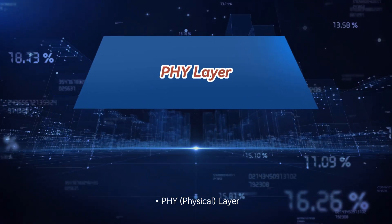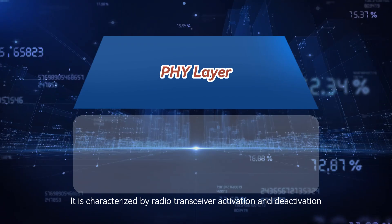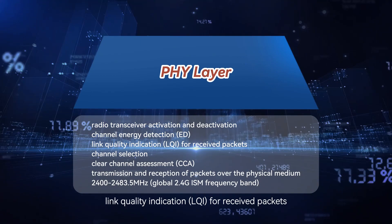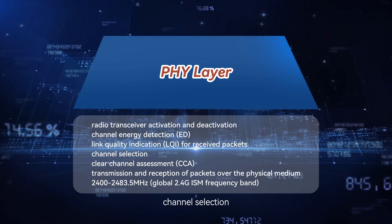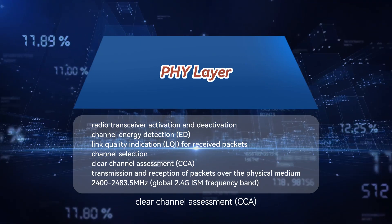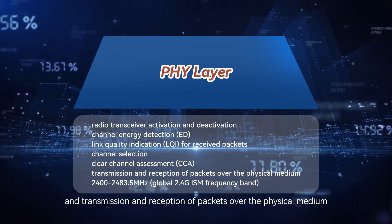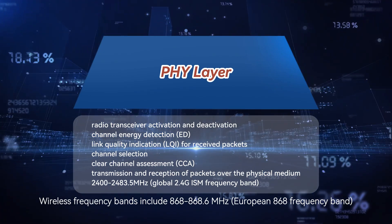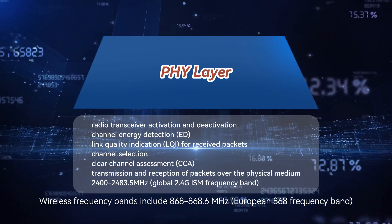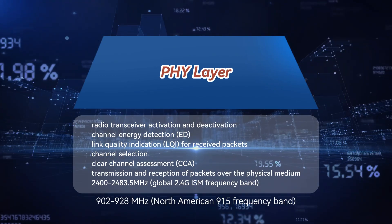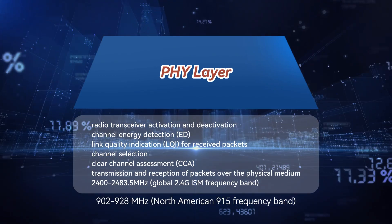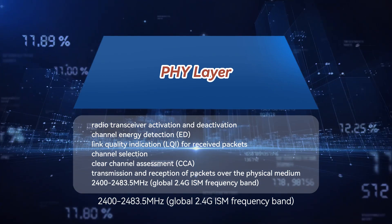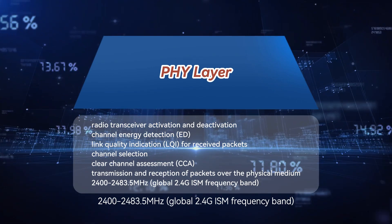The PHY (Physical) layer is characterized by radio transceiver activation and deactivation, channel energy detection (ED), link quality indication (LQI) for received packets, channel selection, clear channel assessment (CCA), and transmission and reception of packets over the physical medium. Wireless frequency bands include 868 to 868.6 MHz (European 868 band), 902 to 928 MHz (North American 915 band), and 2400 to 2483.5 MHz (Global 2.4 GHz ISM band).